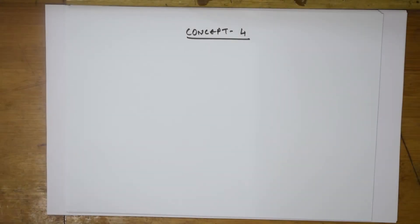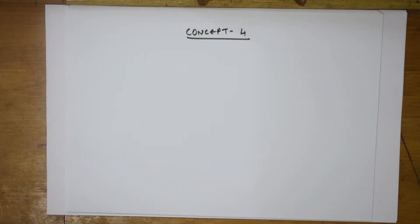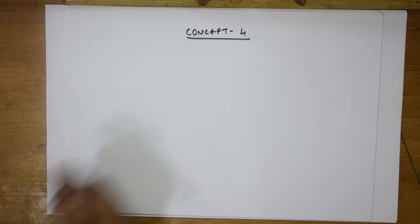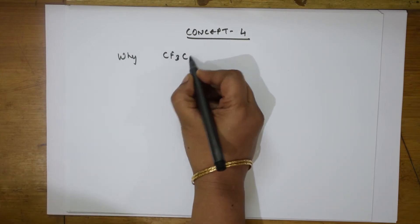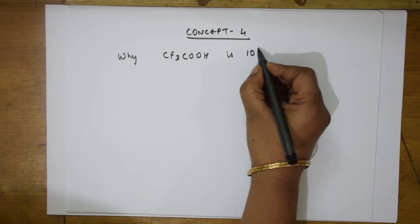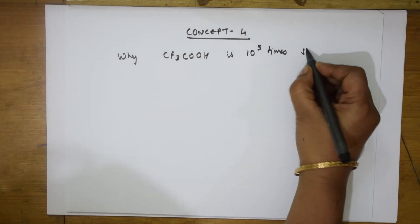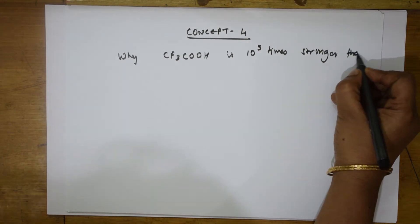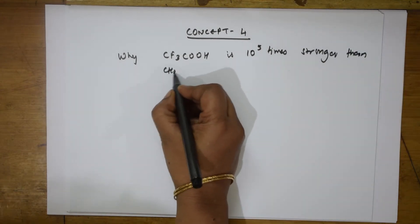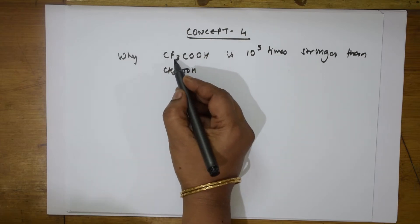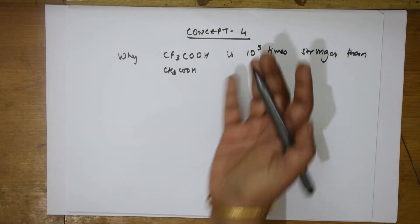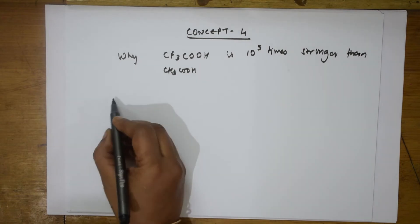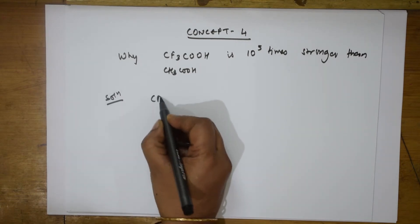Let us come back and start with Concept 4. Suppose in the exam they give you a certain order or ask you a particular question — like in a multiple choice question, if they give you CF3COOH is 10^5 times stronger than acetic acid. You can directly say, as I mentioned, electron withdrawing groups are present, and more electron withdrawing groups means more acidity.